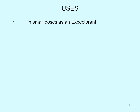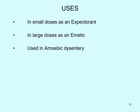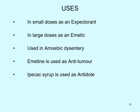In the uses of Ipecac: in small doses, it is used as an expectorant; in large doses, it is used as an emetic. It is well known in treating amoebic dysentery. Emetine is also used as an anti-tumor agent, and Ipecac syrup is used as an antidote because of its emetic properties.